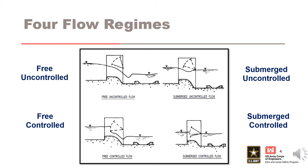There are four basic flow regimes for spillway flow. The naming convention for the four regimes gives you an indication of the effects of the headwater and tailwater conditions. When the tailwater is low such that it has no effect on the discharge through the spillway, this is referred to as a free flow condition. When the tailwater is high such that it submerges the weir and reduces the discharge through the spillway, this is referred to as a submerged flow condition.